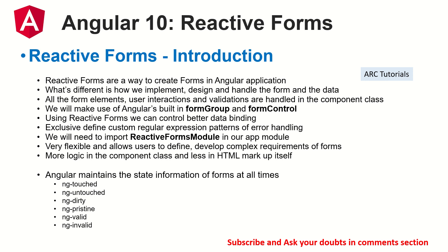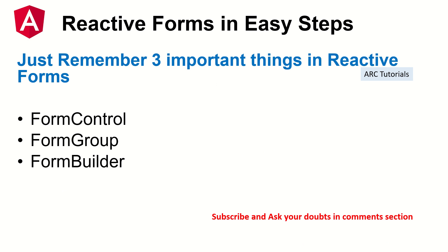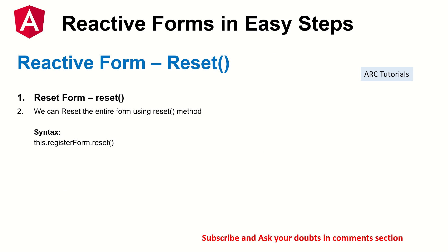Angular internally maintains the state of information of the forms, which means that at any given point of time you can exactly extract the state the form is in. I have covered this in detail in the previous episode. To reset any form, you use the reset method provided on the form. The syntax is simple — you use the form instance and then call the reset method.